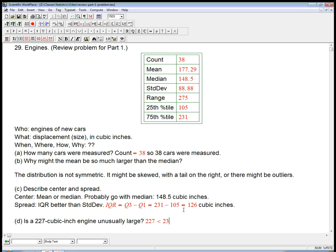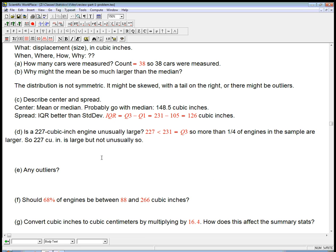So, 227 is less than 231, which is Q3 or the 75th percentile. So, more than a quarter, more than one quarter of engines in the sample are larger. So, I'd say it's large, but not brag-worthy large, not unusually large. So, 227 cubic inches is large, but not unusually so. So, that's a good use of these percentile, or in other words, quartile information.